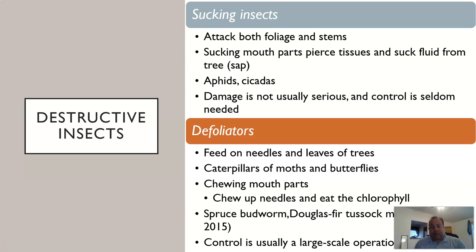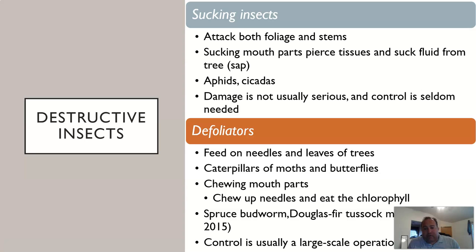The first two categories are sucking insects and defoliators. Sucking insects attack both foliage and stem using sucking mouthparts — they pierce leaf tissue and stem tissue to suck out tree sap and chlorophyll. Aphids and cicadas fall into this category. The damage from them is usually not serious, and control is generally not needed for sucking insects.